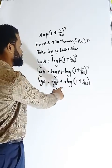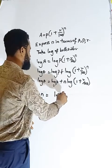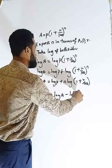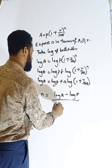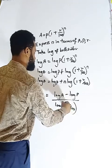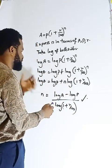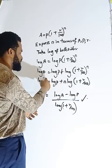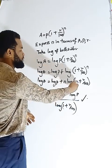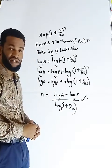So at this point, I want to make N the subject of the formula. So I'm going to say that N is equal to log A minus log P all over log 1 plus R over 100. I have made N the subject. So what I did was carry this P to this side. It becomes minus and divide both sides by log 1 plus R over 100. This is how to make it the subject of the formula.